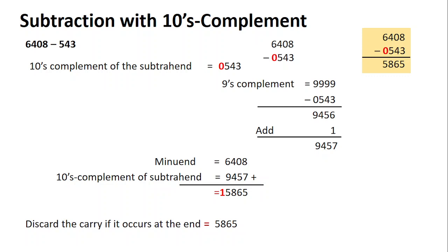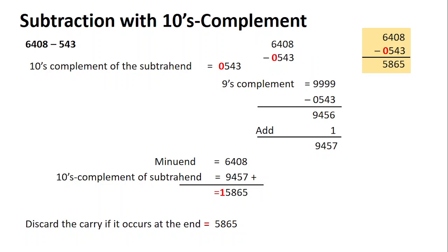Next problem: subtract 543 from 6408. First, ensure both numbers have the same number of digits. Here 543 has three digits and 6408 has four digits — they are not equal. So you must pad 543 with an extra zero on the left to make it 0543. This is very important in the examination — you must pad with a zero on the left-hand side to ensure both numbers have the same number of digits, otherwise you will not get the correct answer.